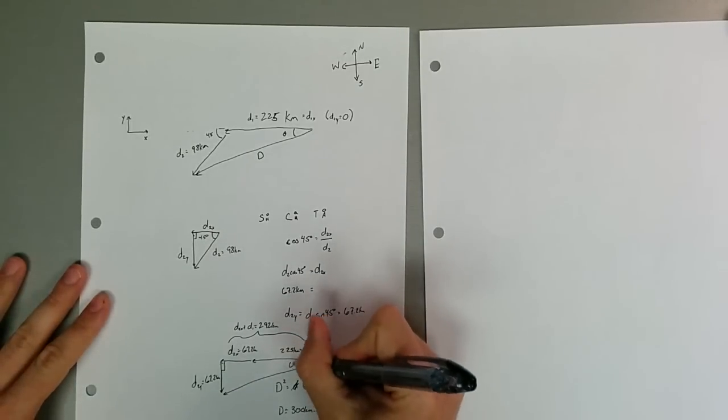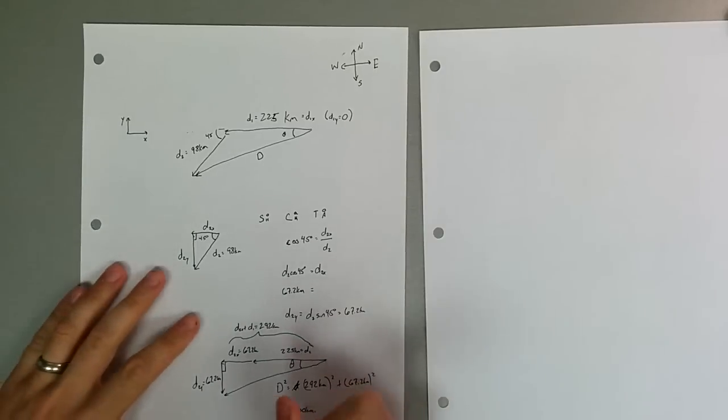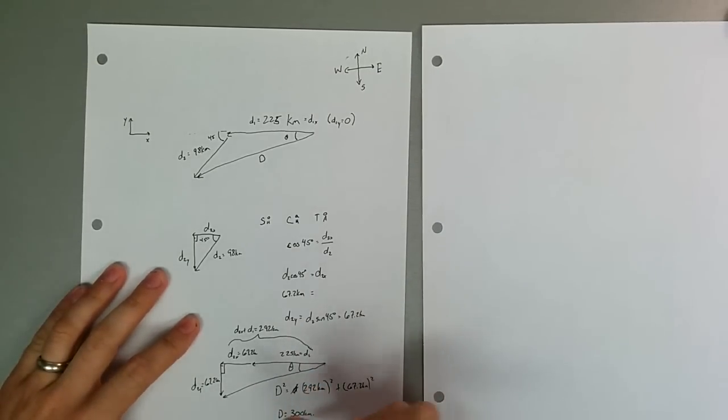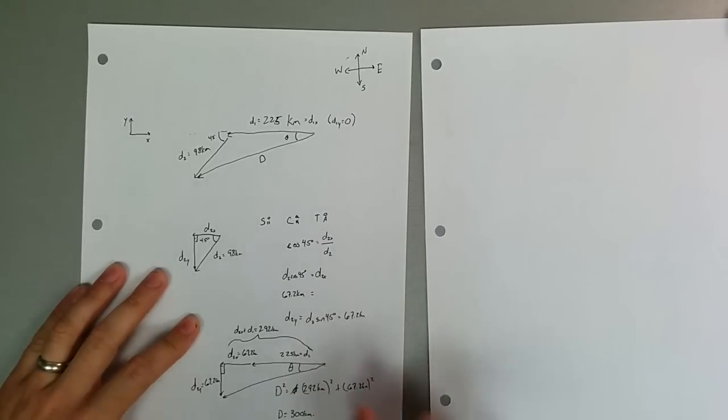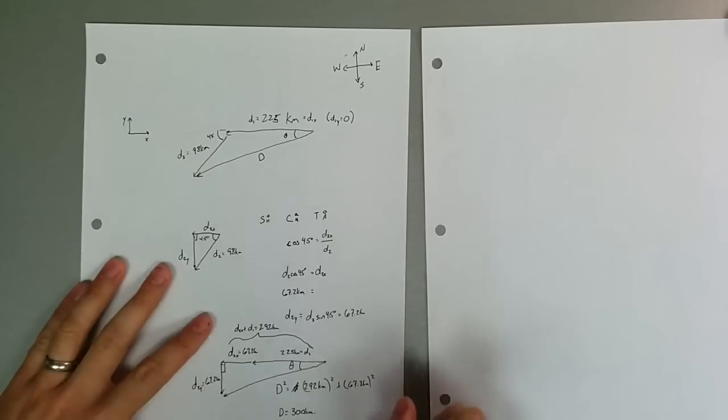Now, we want to find this angle. We can use any of ours now because we have everything solved. In this case, I'll just use sine. We just find that theta is equal to the inverse sine of 67.2 kilometers over 300 kilometers. Our kilometers cancel, and we just get the inverse sine is 12.9 degrees.